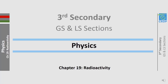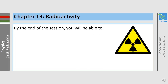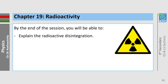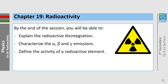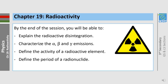Hello and welcome to this session of physics dealing with chapter 19, radioactivity, for the third secondary classes sections LS and GS. By the end of this session you will be able to explain radioactive disintegration, characterize alpha, beta, and gamma emissions, define the activity of a radioactive element, define the period of a radionuclide, and state the law of radioactive decay.